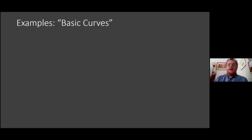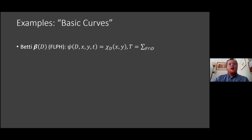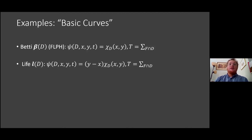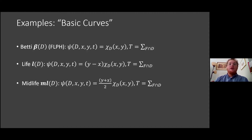Using the fundamental lemma idea: by assigning all diagram points the value one and summing inside the fundamental box, we just count — we call this the Betti curve, also referred to as a persistence intensity function in the literature. Similarly, if the function is the lifespan (death minus birth), we get a life curve; we can also get a midlife curve and several others.